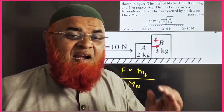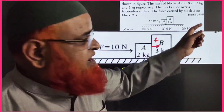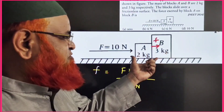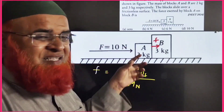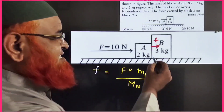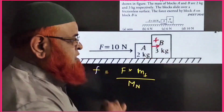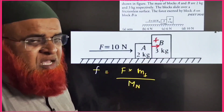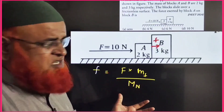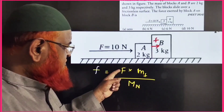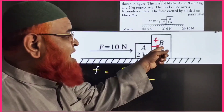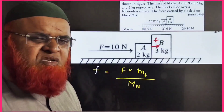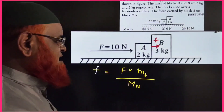This is a latest question asked in 2024. I have a simple shortcut whenever you get this type of problem. A force of 10 N is applied on two blocks, and we are asked to find out the contact force — the force exerted on the second mass. The shortcut formula is: contact force = F into the mass on which contact force is applied, divided by the net mass.